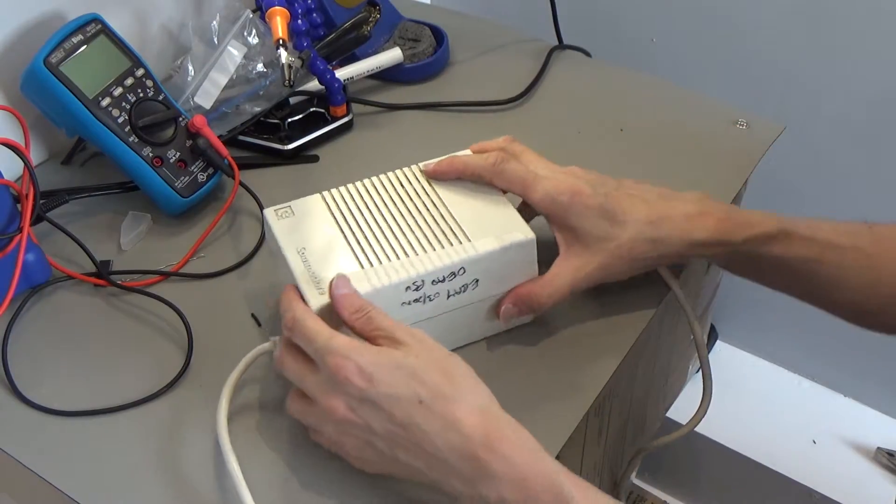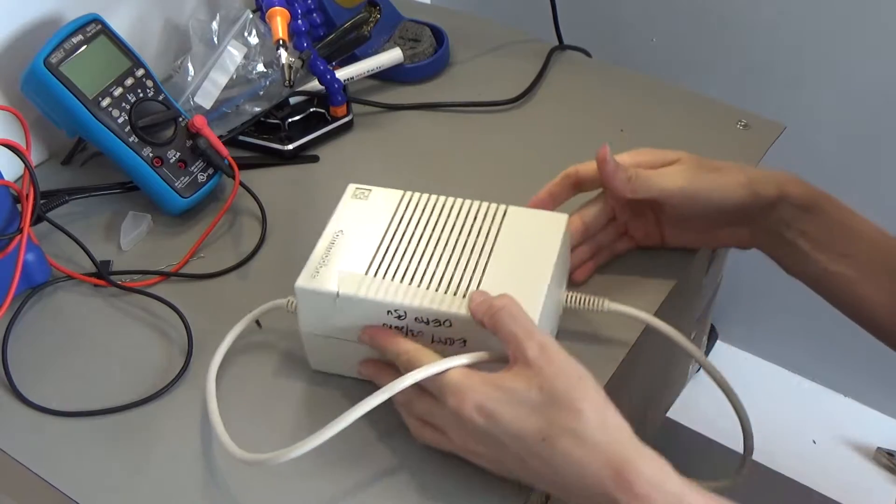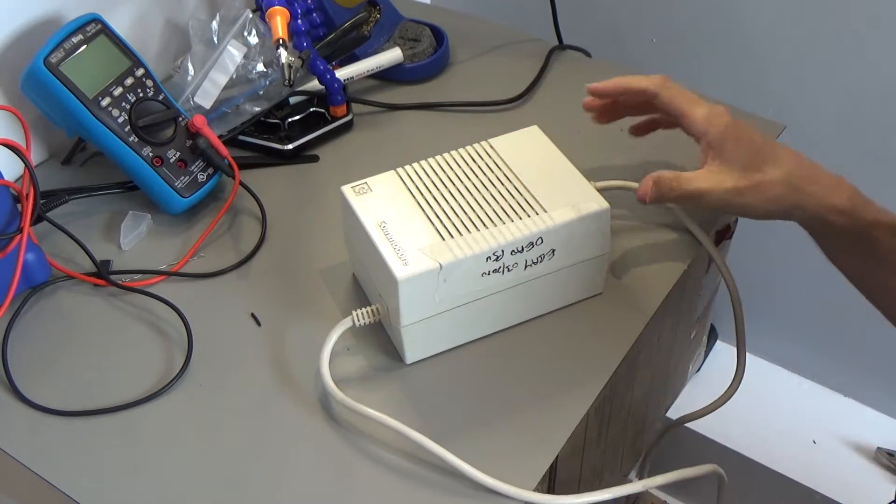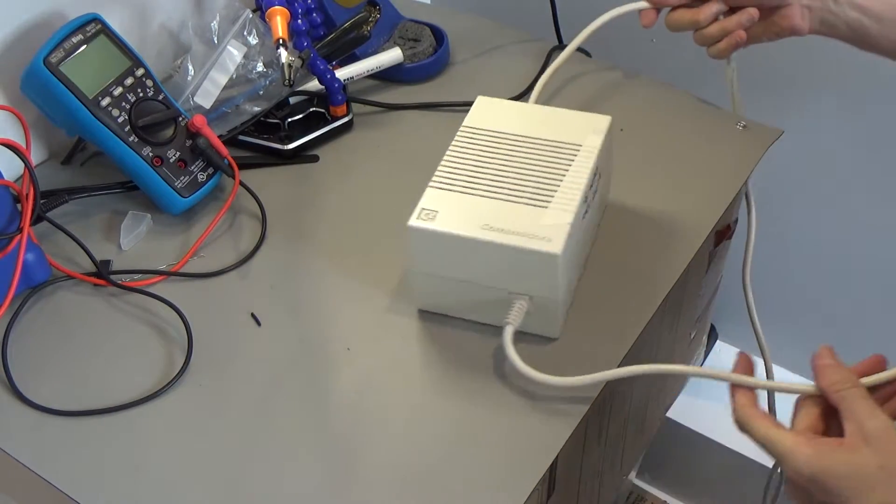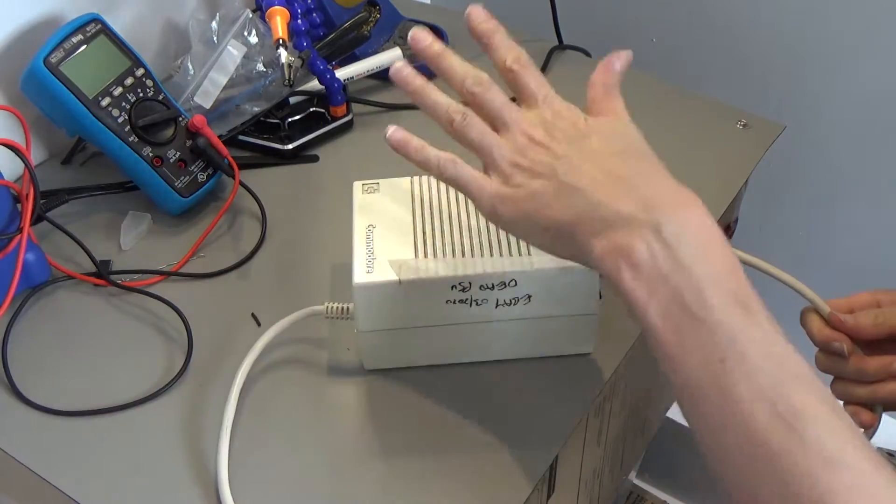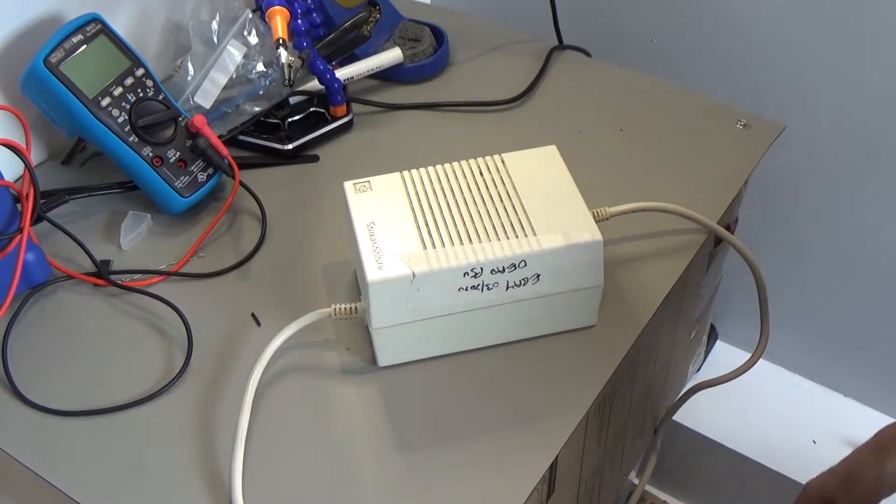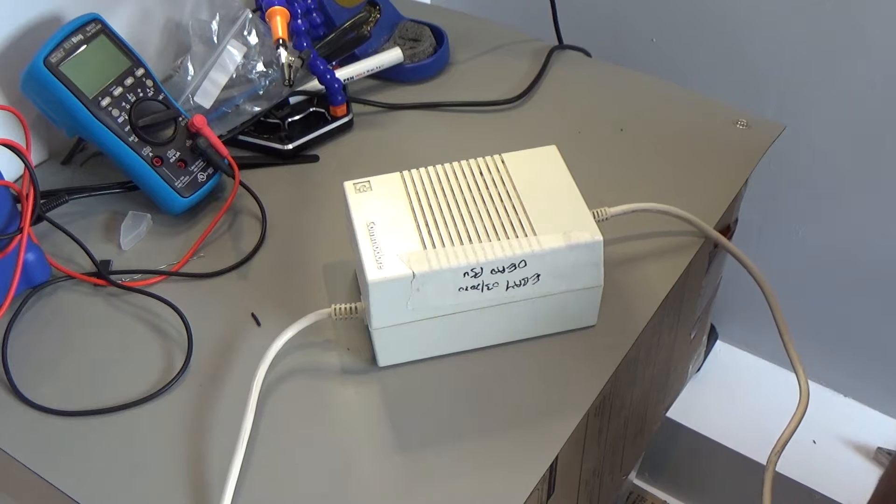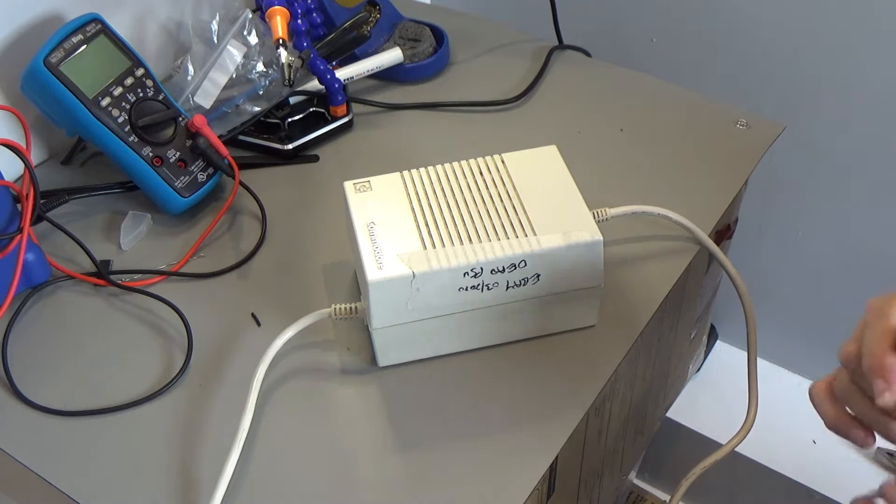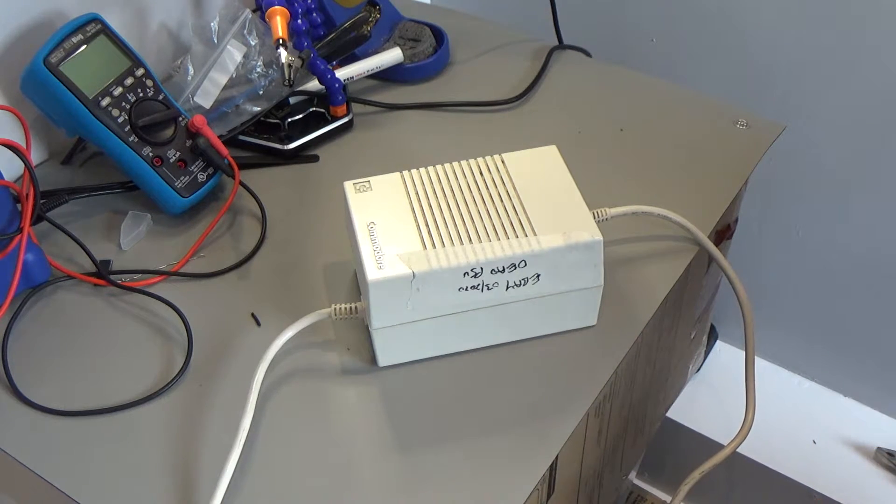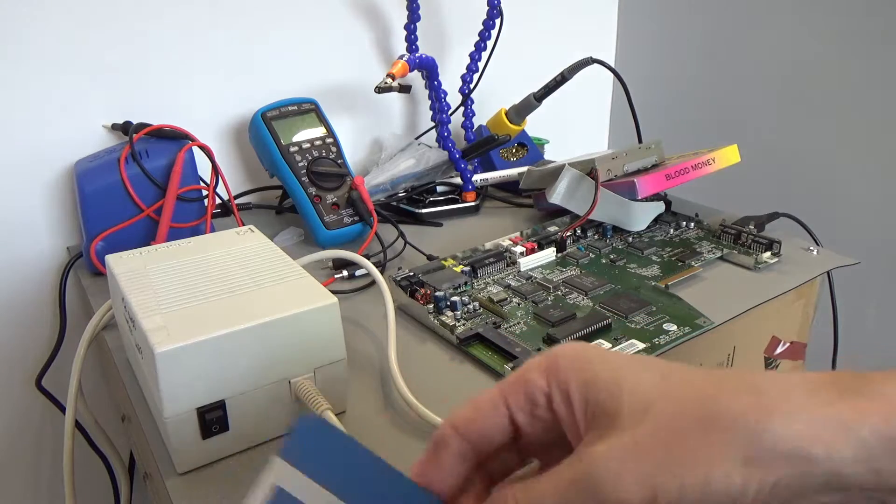Right. So there it is. So Mean Well power supply inside an Amiga A600 case, which fits with room to spare, but just I haven't found a way to fix it in yet. So as I've tested the voltages on this, I suppose the next thing to do is power up an Amiga and find out if this thing is a pass or fail.